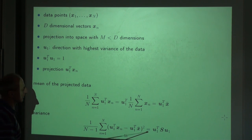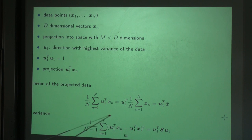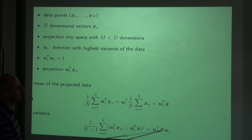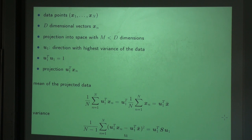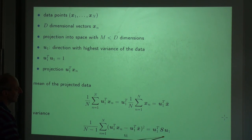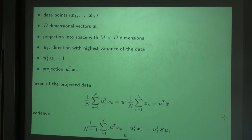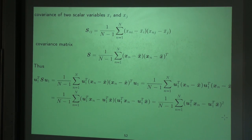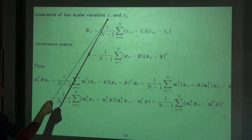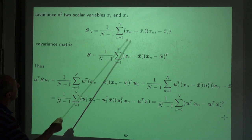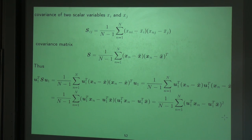This is a crucial equation: the variance equals u1 transpose times the covariance matrix S times u1. This is not trivial to see, so we will now derive this equality, starting from the right-hand side. We start with the definition of covariance of two scalar variables xi and xj. Note that bold symbols are vectors and non-bold symbols are scalars.